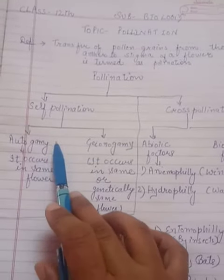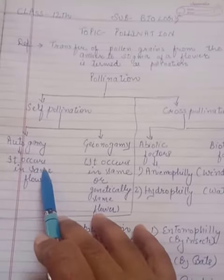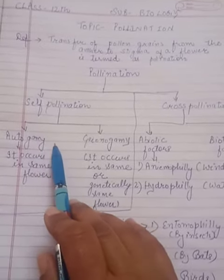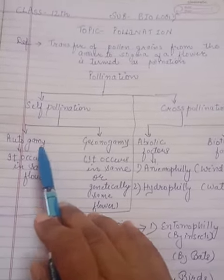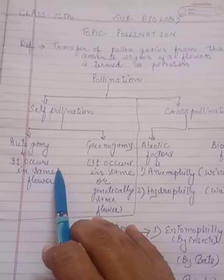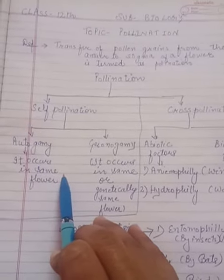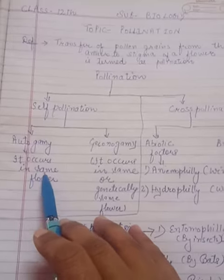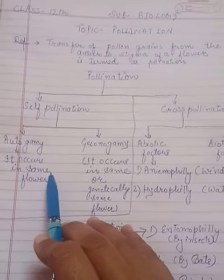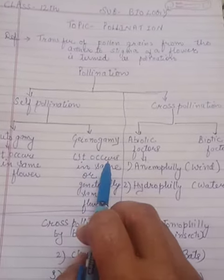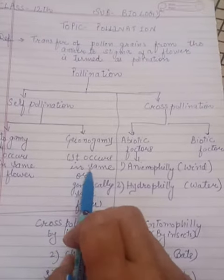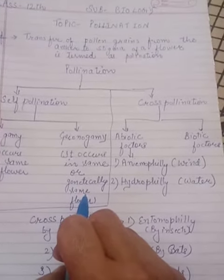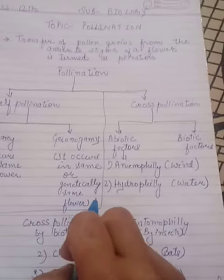Autogamy occurs within the same flower, where anthers of the same flower are attached with the stigma of the same flower and the process of pollination occurs. In geitonogamy, it occurs in the same or genetically same flowers in which the same genus is present.